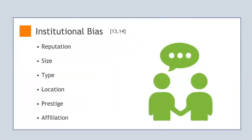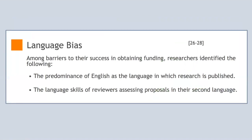Institutional bias is another common bias in peer review and is a bias that occurs due to the reputation, size, type, location, or prior research conducted by an institution. In addition, prestige bias and affiliation bias can also influence institutional bias, either due to the status of the institution or due to a reviewer's current or previous affiliation with the institution. Examples of institutional bias in peer review include the availability of resources, the size of the institution, and collaboration with other institutions. In terms of language bias, reviewers' assessments may be impacted by their impression of what constitutes a well-written application if the quality of the writing does not meet their expectations.